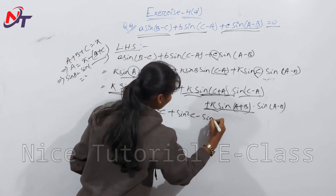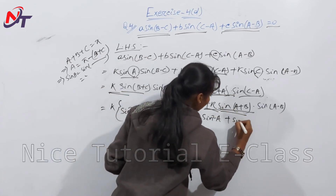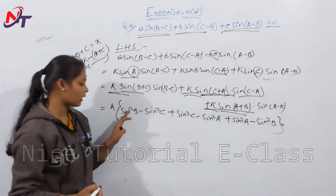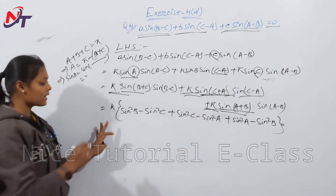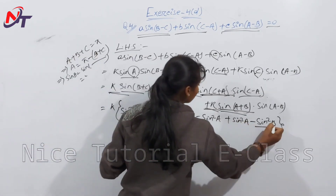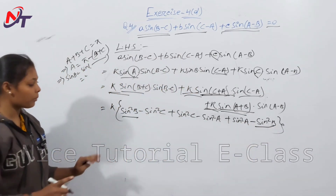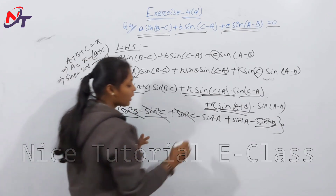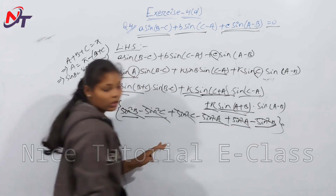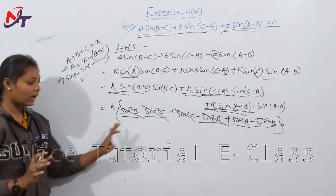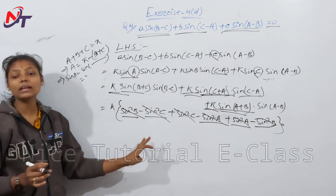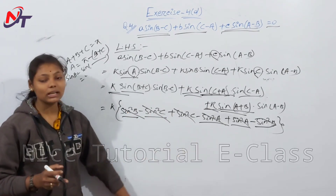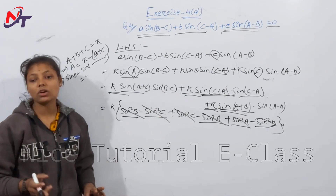So the LHS becomes k[(sin²B − sin²C) + (sin²C − sin²A) + (sin²A − sin²B)]. All terms cancel — sin²B, sin²C, and sin²A all cancel via plus-minus, giving k × 0 = 0.